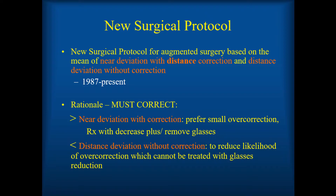My goal is to base the surgical dosing on the mean or the average of the near deviation with distance correction and the distance deviation without correction. This is the key point of this whole talk, and I've been using this since 1987. Why did I pick these numbers? Most of the other augmentation techniques were arbitrary — add a millimeter, or use different combinations of near and distance. But I think this one has real physiologic rationale.